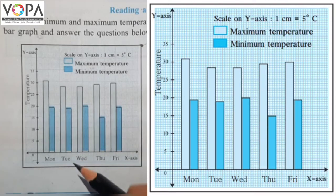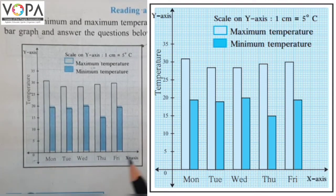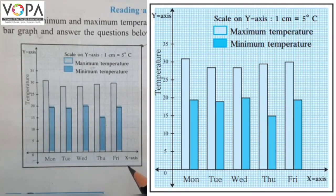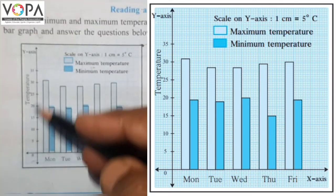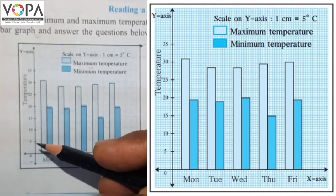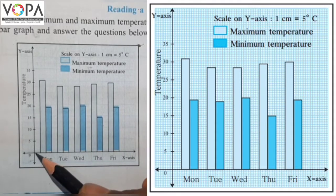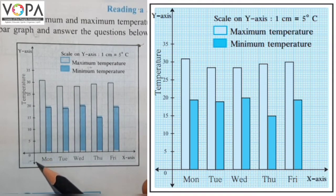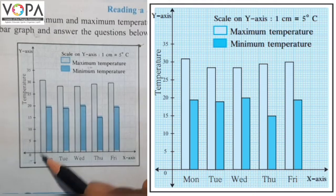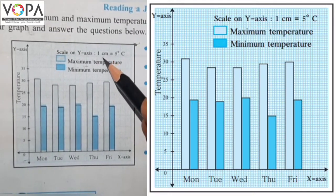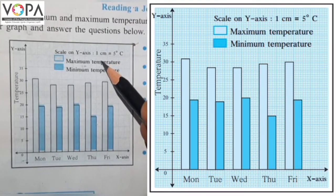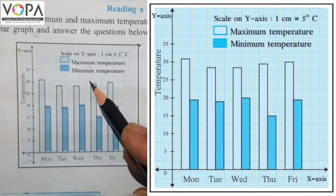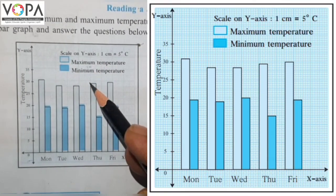In this graph, the horizontal line is called the x-axis and the vertical line is called the y-axis, and O is the point of origin. One important thing on the graph paper is scale, because without scale we cannot read the graph properly or correctly.